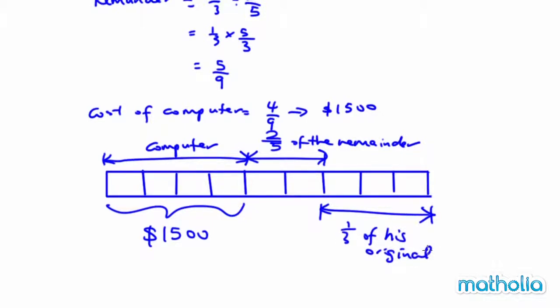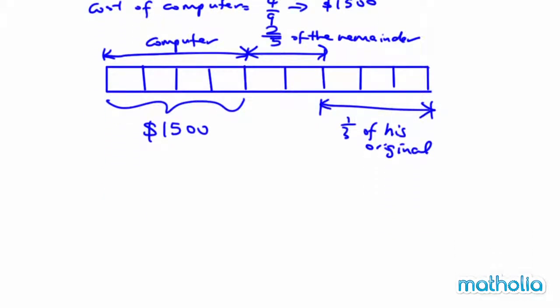Now, with this diagram, you will be clearer and then you can answer the questions. So, 4 over 9 will be the computer. 4 over 9 represents 1,500. I can find 1 over 9, which is 1,500 divided by 4, and you have 375.